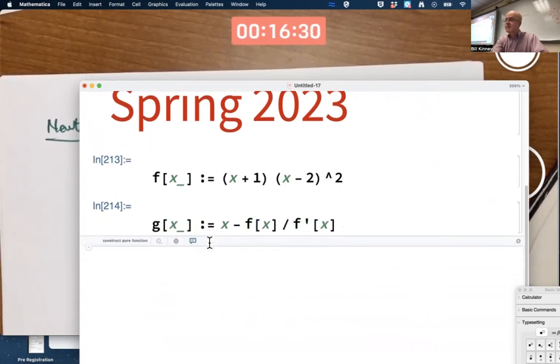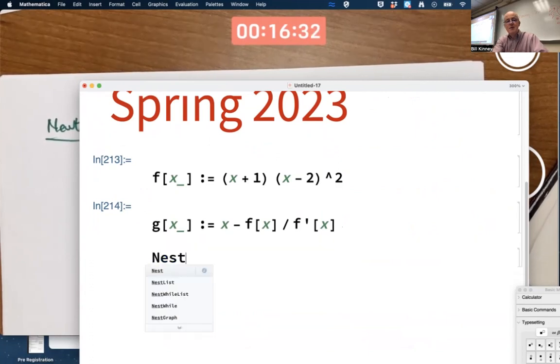If you're going to implement this in Mathematica, the quickest way to do it is not yet to use the Newton plot code unless you've already got that entered. The quickest thing to do is nestlist.